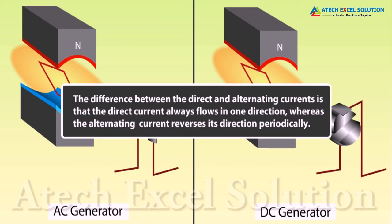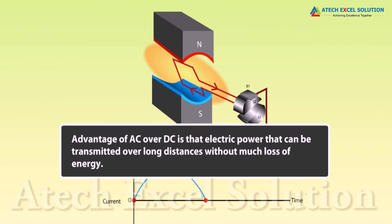The difference between the direct and alternating currents is that the direct current always flows in one direction, whereas the alternating current reverses its direction periodically. In India, the frequency of AC is 50 Hz. Advantage of AC over DC is that electric power can be transmitted over long distances without much loss of energy.